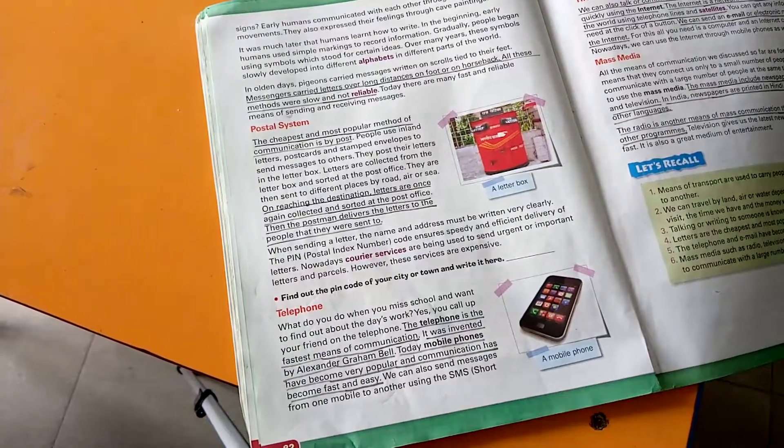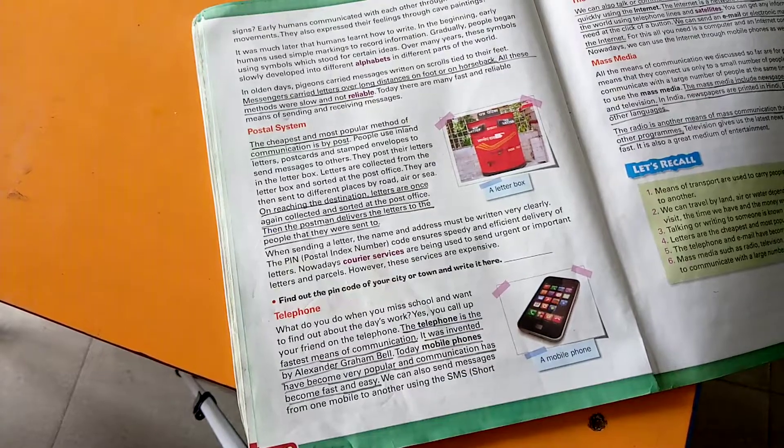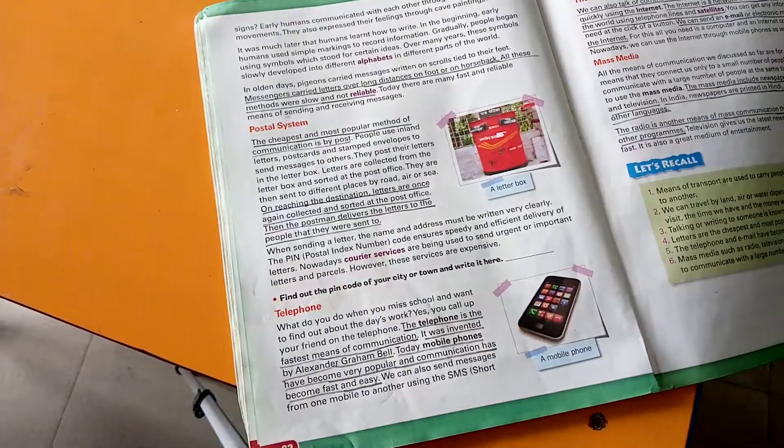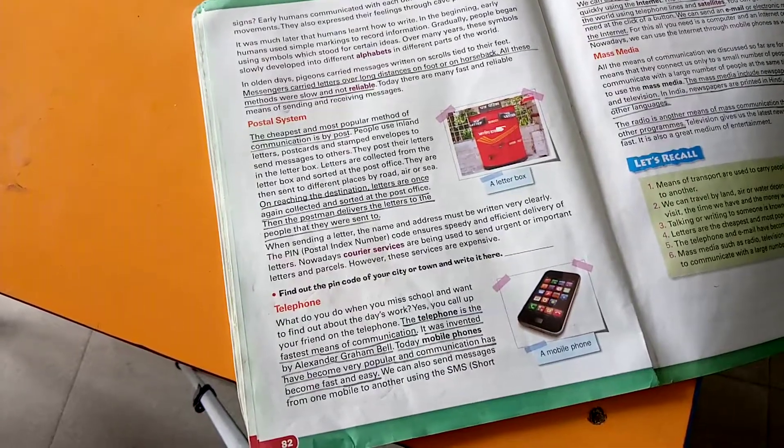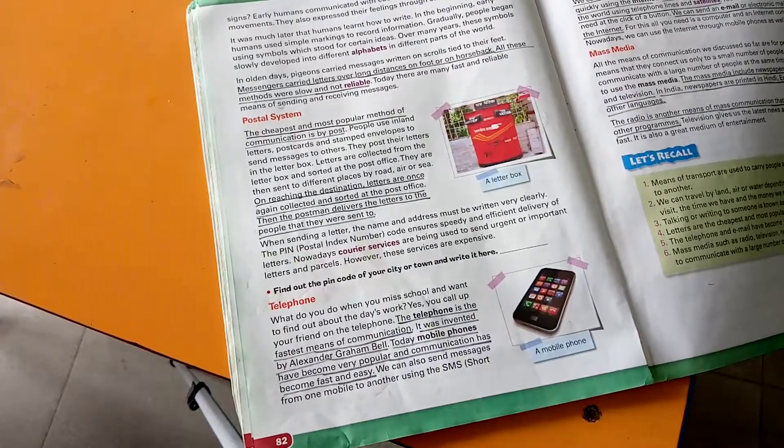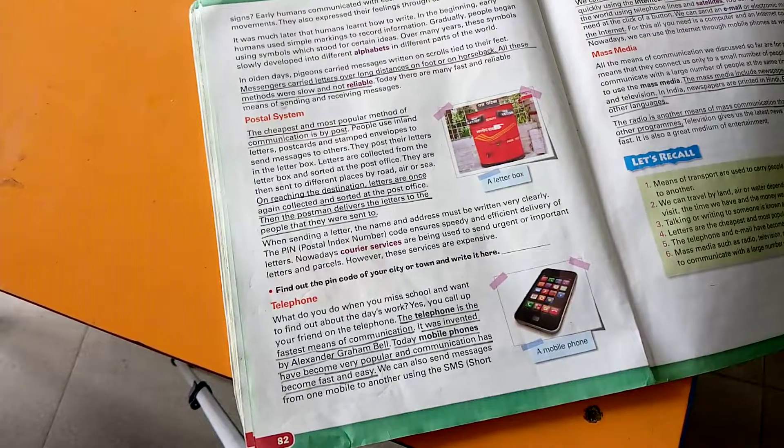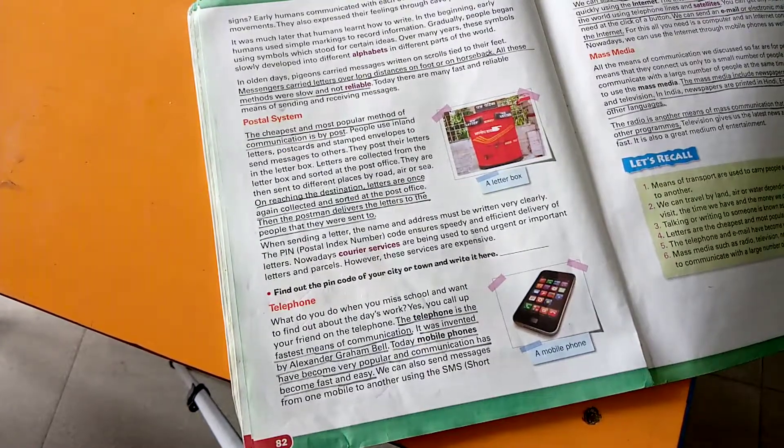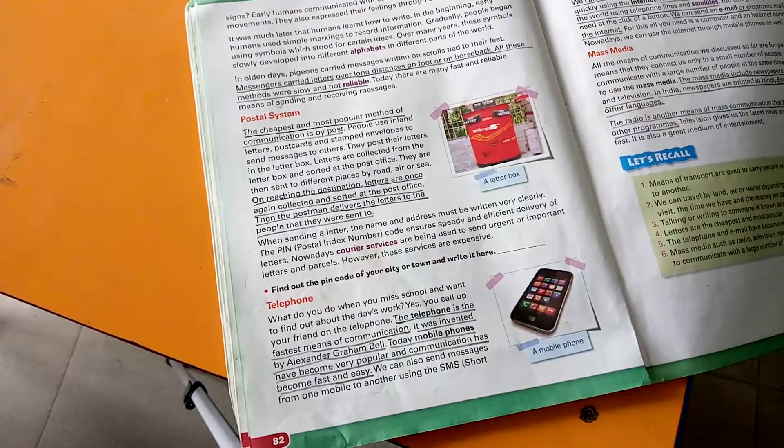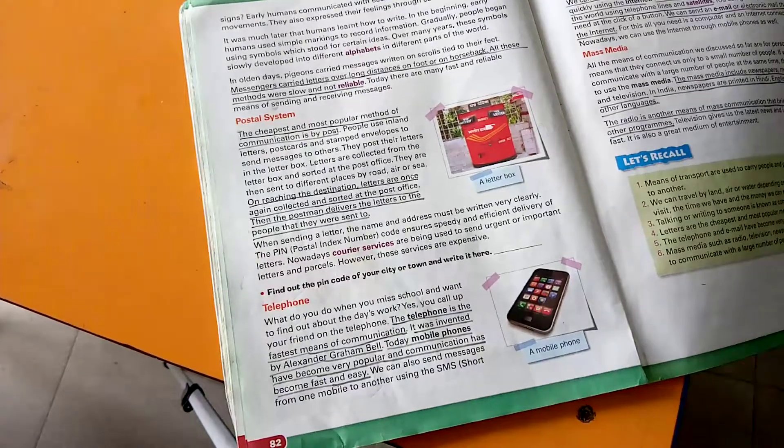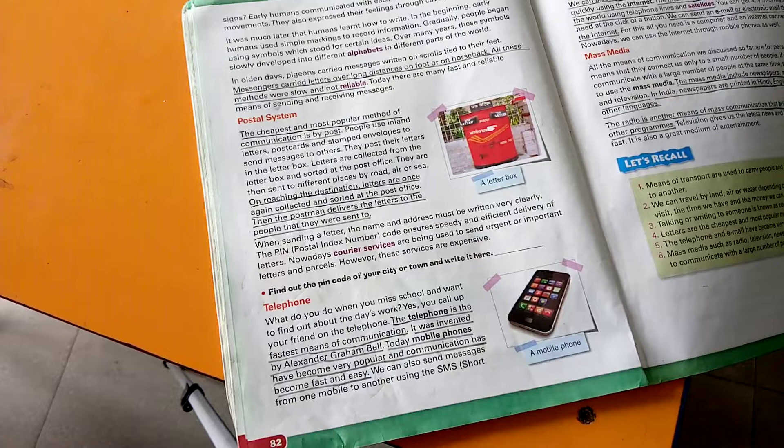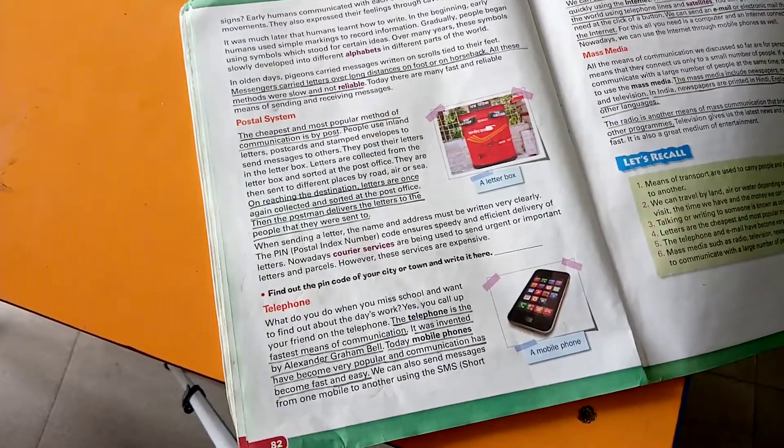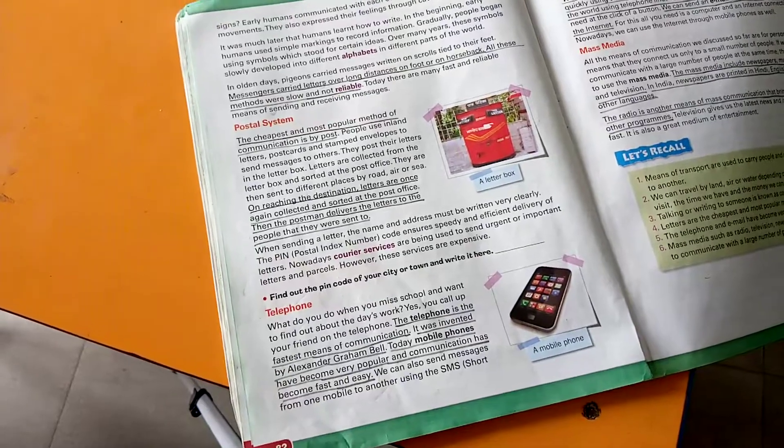Postal system is the cheapest means of communication. When sending a letter, the name and address must be written very clearly. The PIN, postal index number, could ensure speedy and efficient delivery of letters. Nowadays, courier services are being used to send urgent or important letters and parcels. However, these services are expensive.